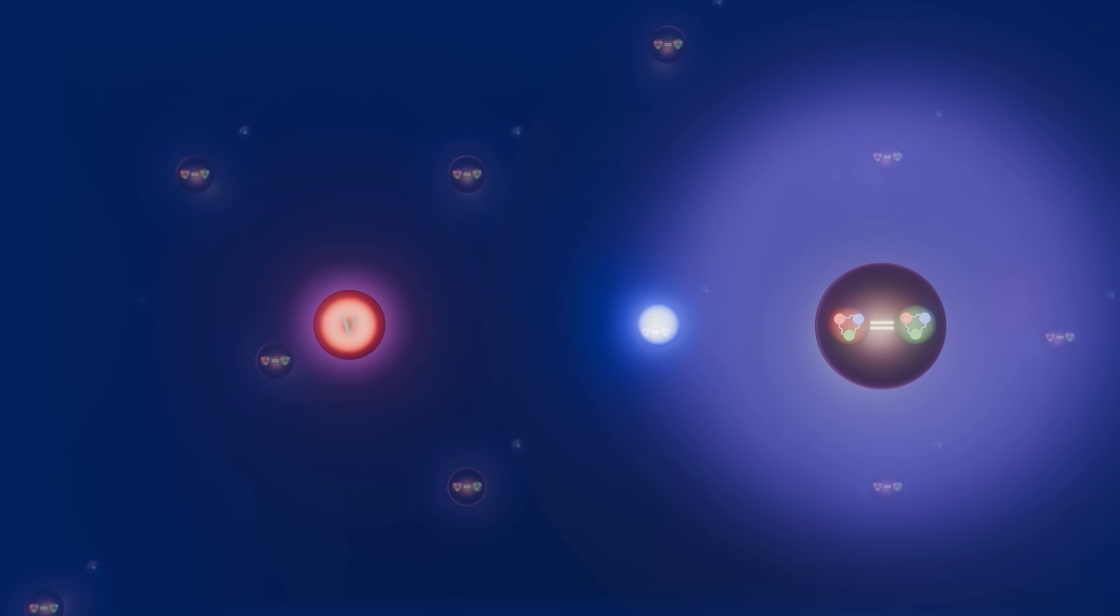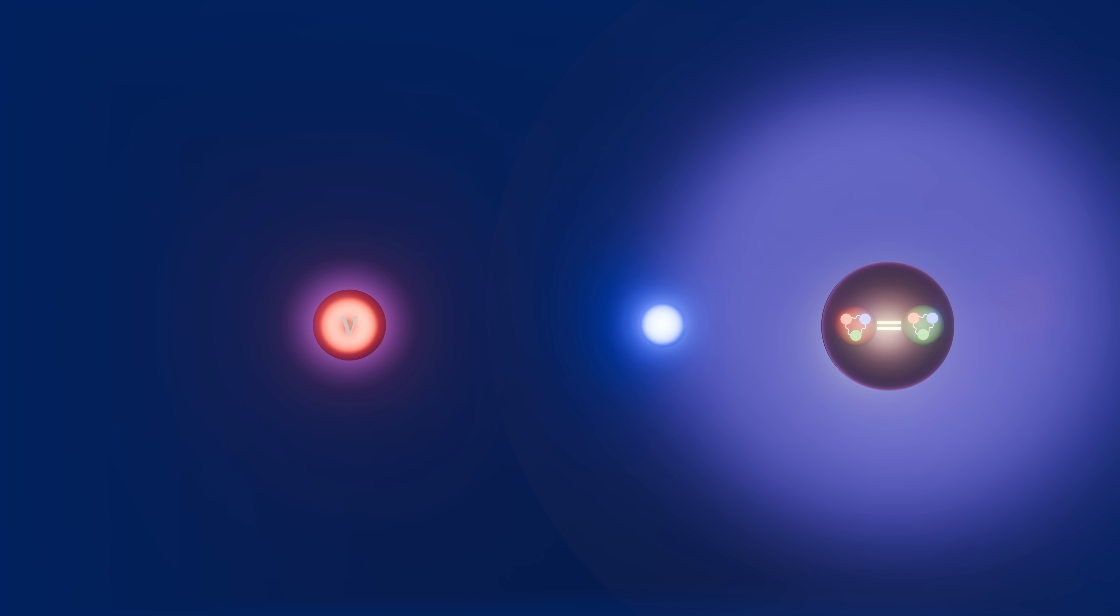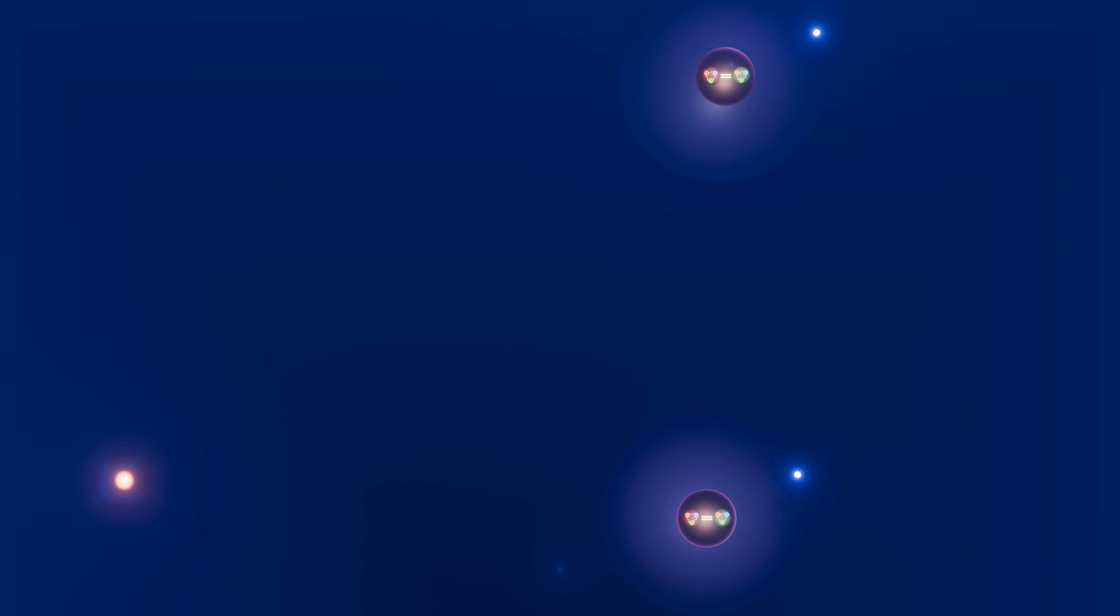Similar to electrons, neutrinos belong to the lepton family of particles, meaning that they do not interact with other matter through the strong nuclear force that binds other subatomic particles like protons and neutrons together. Unlike electrons, they are neutral and have almost no mass whatsoever. This lack of charge and tiny mass means that they can only interact with other particles through the weak nuclear force.